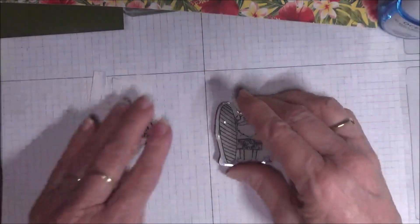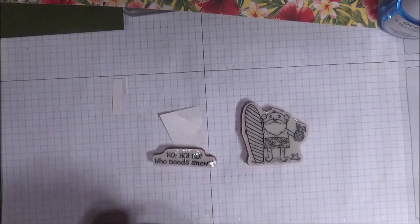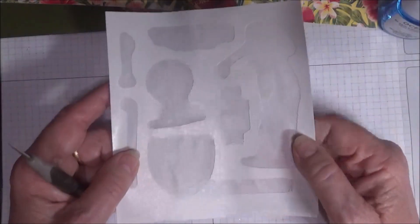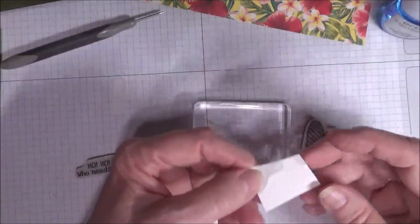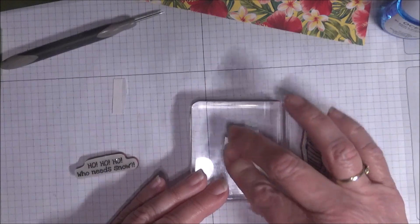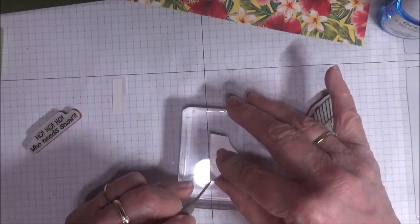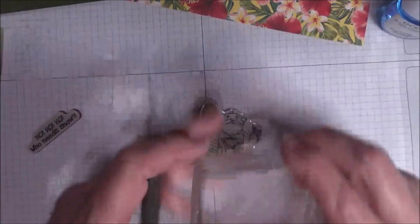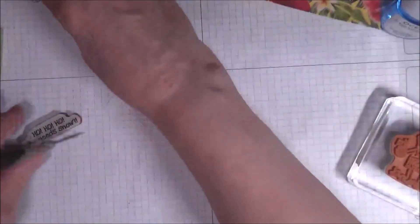This stamp set is a clear mount stamp set. I like to convert them to the cling stamp sets we have now. I saved the sheets from my new cling mount stamp sets, and then I cut pieces from them. I take a block, cut out a piece, and make sure you have the backing on it so you know which side goes down.